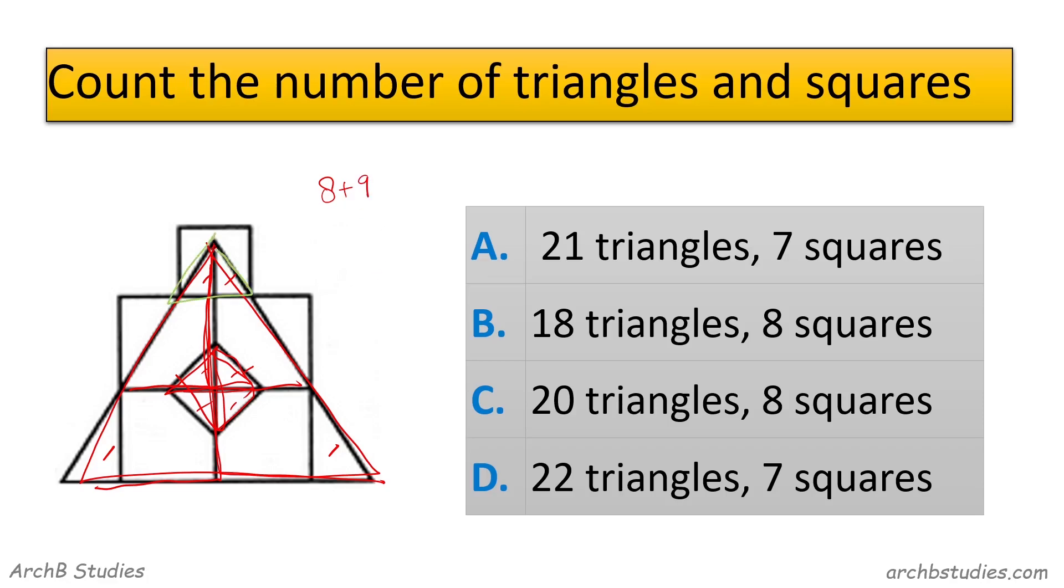Then we have this one, 1, 2, and 1 and 2. So plus 2. So 17, 19, 21. So I think we have the first option. This is the correct option.